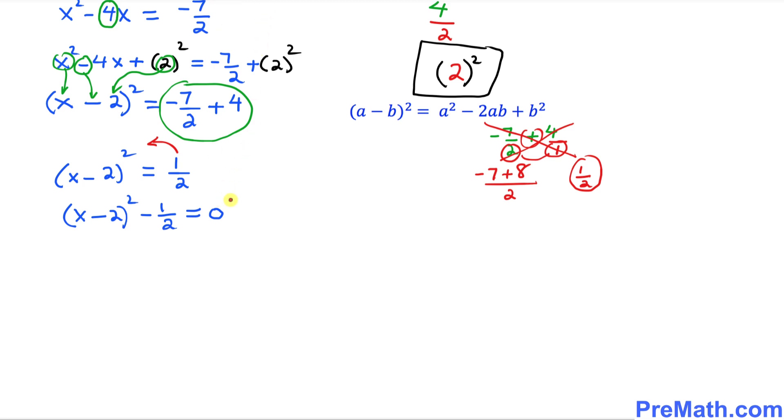Finally, this is what we're going to do. I want you to just simply disregard this 0. We no longer need it. We only got this part. We got (x - 2)² - 1/2.